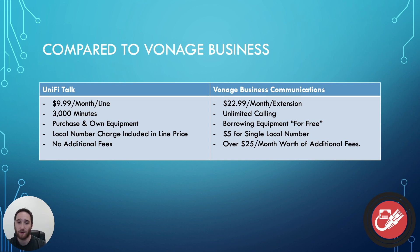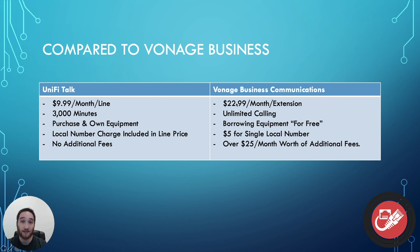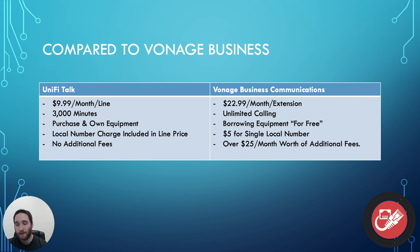Let's do a little comparison to a different provider. I went with Vonage Business Communications because that's what we use where I work, and Unify Talk is a serious contender for us right now — it poses the ability to save us some serious cash. Vonage Business Communications charges $22.99 per month per extension. You do get unlimited calling, and you don't pay for the equipment — they ship it to you on a lease that's technically free, included in the price. You also pay a $5 fee for each local number, and there's over $25 a month in additional fees, which just drives the bill up unnecessarily.